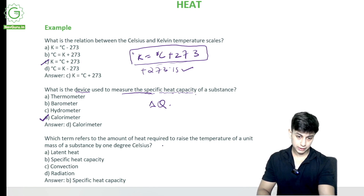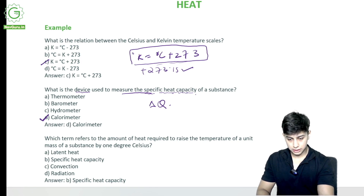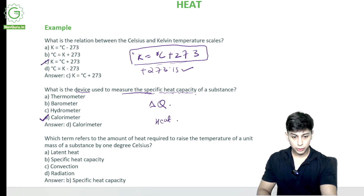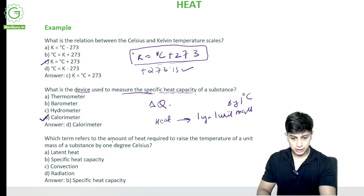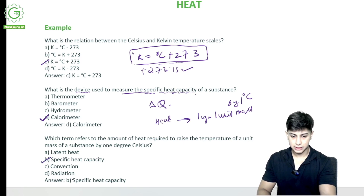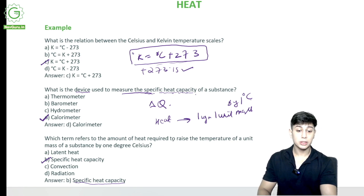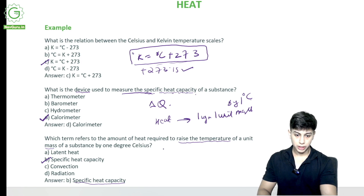Which term refers to the amount of heat required to raise the temperature of a unit mass of substance by one degree Celsius? The options are latent heat, specific heat, convection, and radiation. The answer is specific heat capacity — it is the amount of heat required to raise the temperature of a unit mass by one degree Celsius.